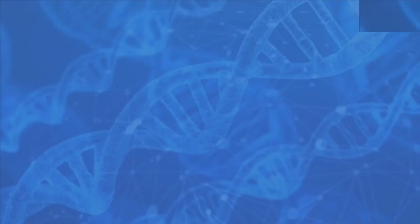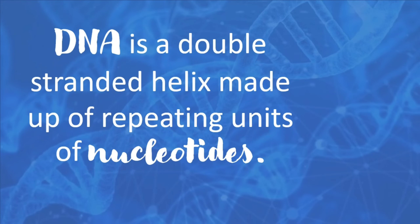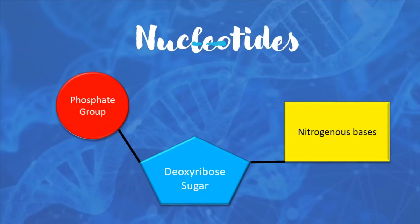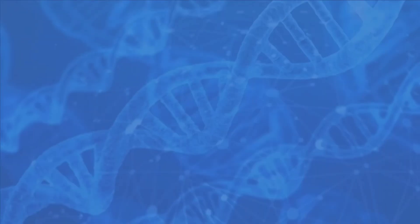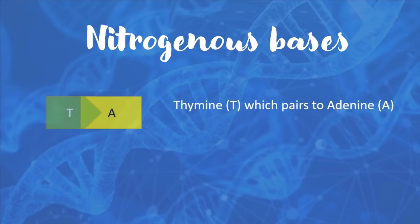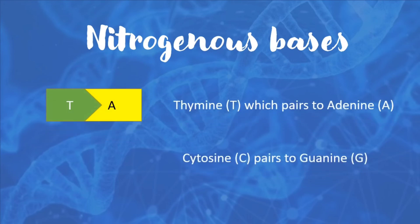DNA is a double-stranded helix made up of repeating units of nucleotides. A nucleotide is composed of the following materials: alternate sugar and phosphate on the side, and on the steps of the ladder are nitrogenous bases. Nitrogenous bases on the rungs or steps of the ladder include thymine, which pairs to adenine, and cytosine, which pairs to guanine.